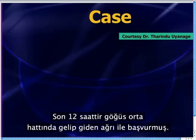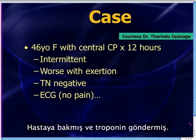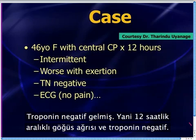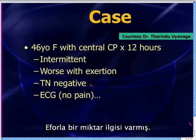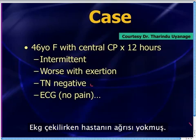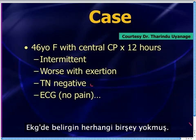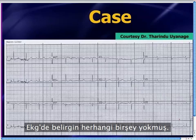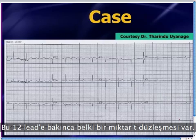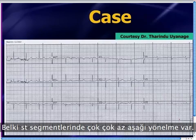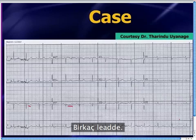The patient presented with central chest pain that's been going on and off for the past 12 hours. He got a troponin — troponin was negative. So this is a negative troponin after intermittent chest pain for 12 hours. There was some association with exertion. The EKG, however, was done without any pain at the time.